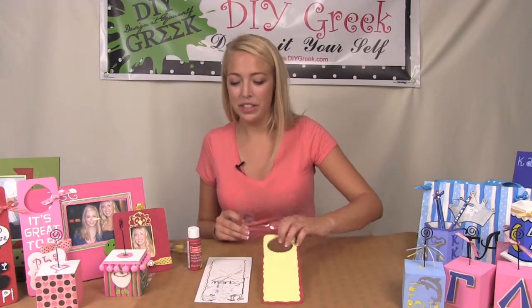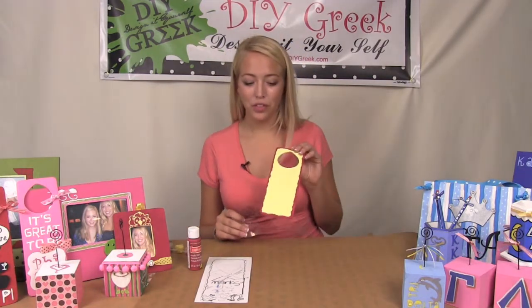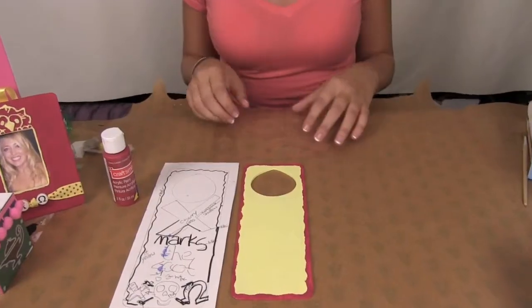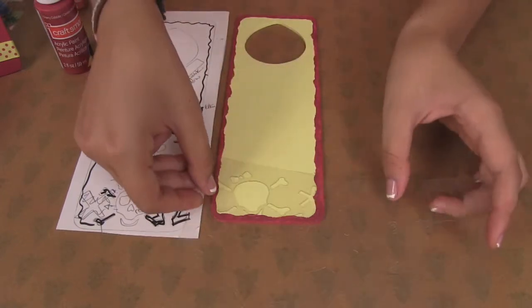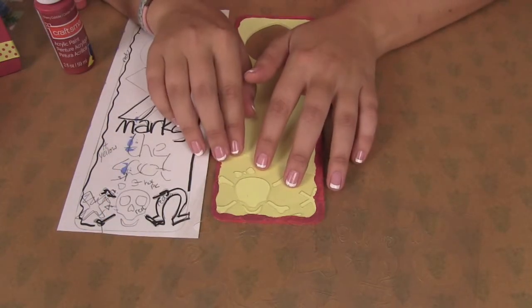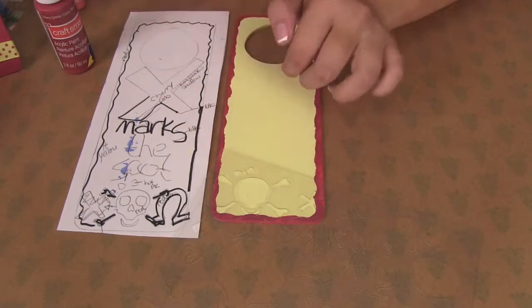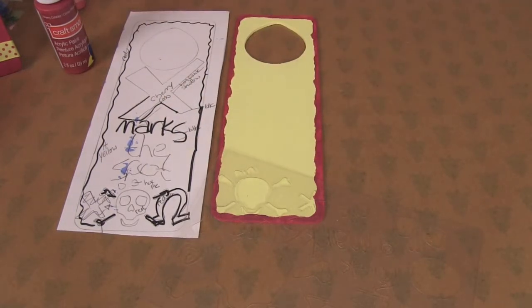We're going to use this skull stencil for the door hanger. I've planned out what I want to do already. I'm going to use the small skull in place of the Kai down at the bottom. So just position where you want it and now I'm going to tape it on.